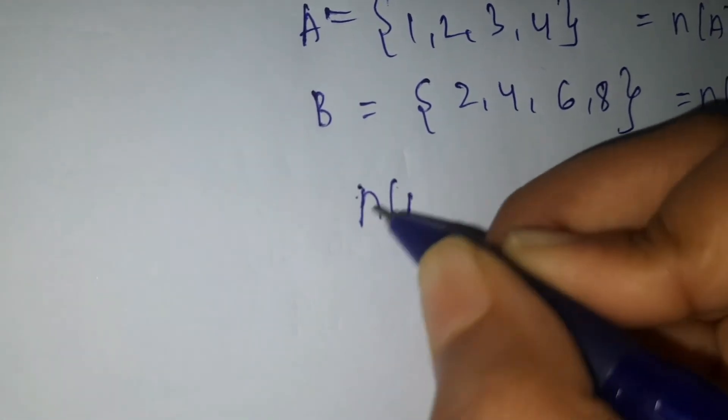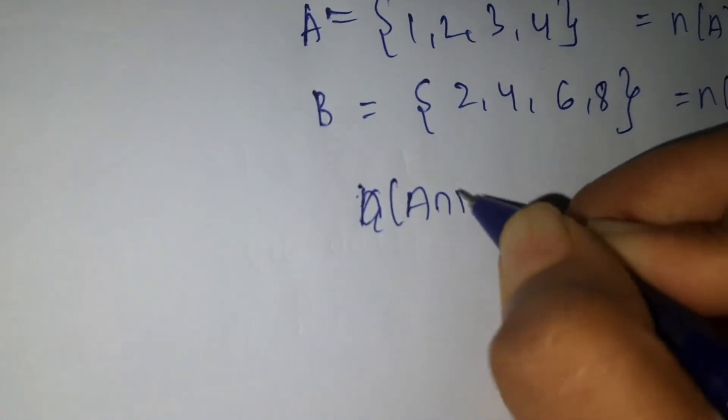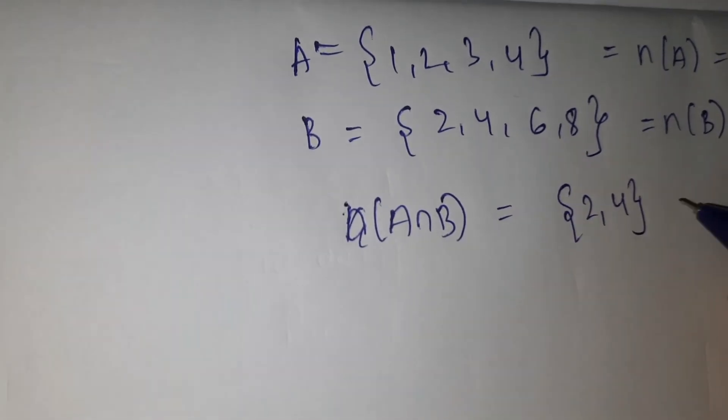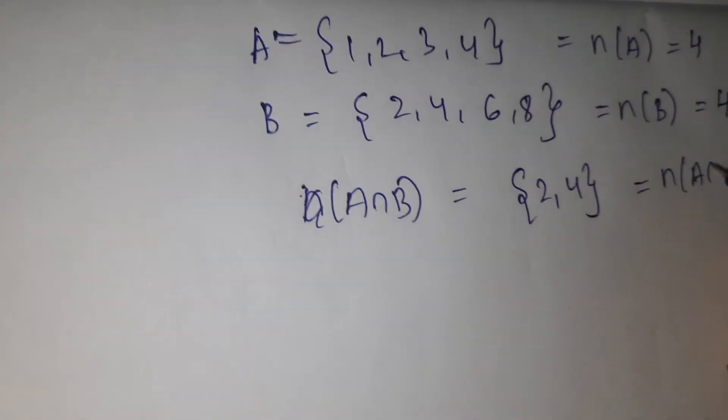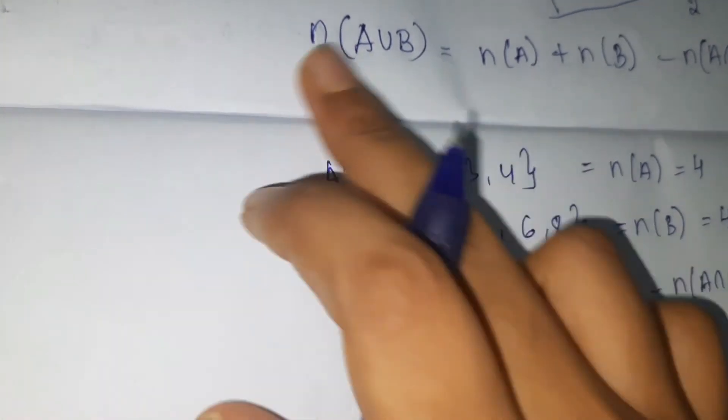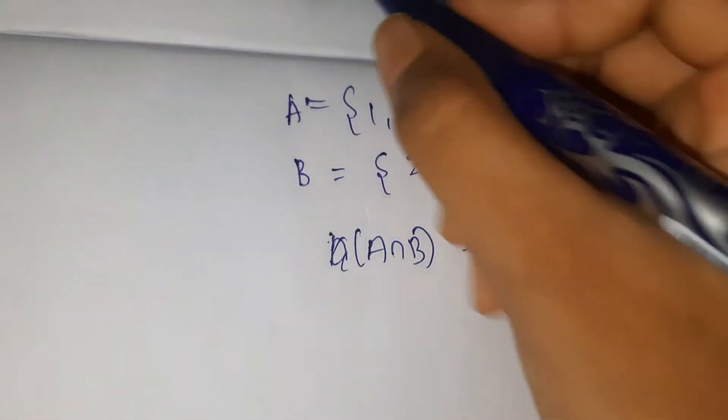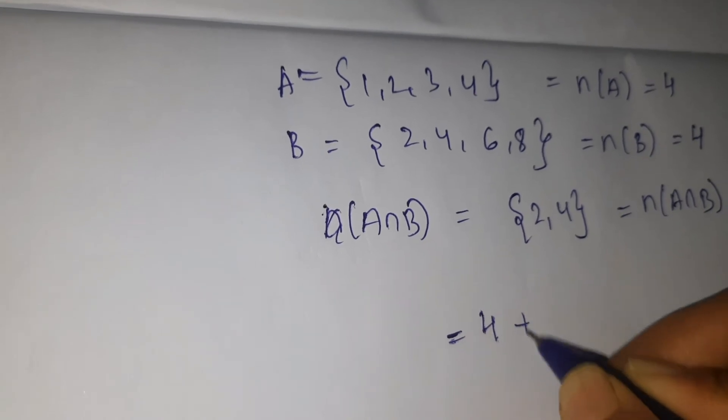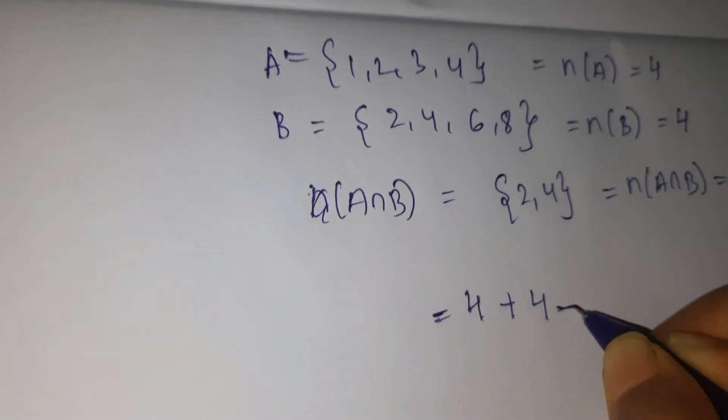Now let's find A intersection B. It is {2, 4}, so n(A intersection B) is 2. Now to find n(A union B), we substitute in this formula: n(A) is 4 plus n(B) is 4 minus n(A intersection B), which is 2.